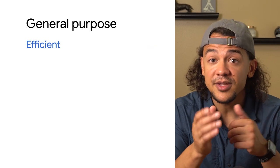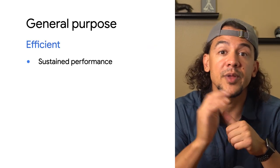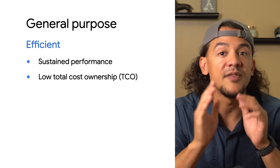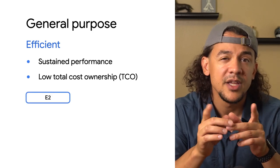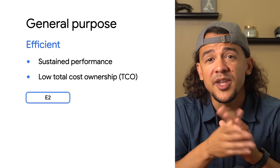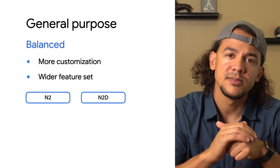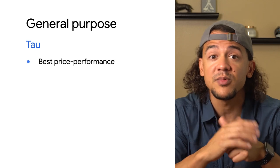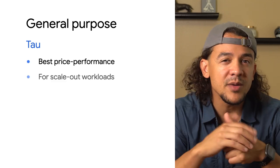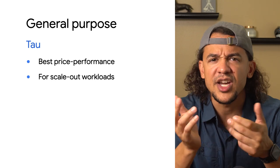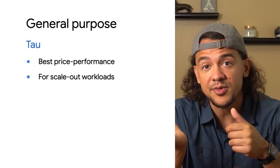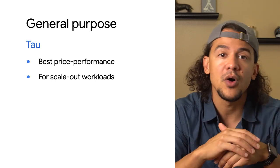Efficient machines deliver reliable sustained performance at the lowest total cost of ownership of any VM in Google Cloud — they're about 31% cheaper than N1 machines. Balanced machines offer more customization and a wider feature set. And TAU, which represents torque and physics, puts the pedal to the metal for industry-leading price performance. TAU is recommended for scale-out workloads such as web servers, containerized microservices, and media transcoding.